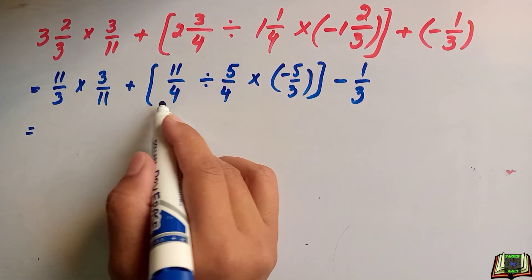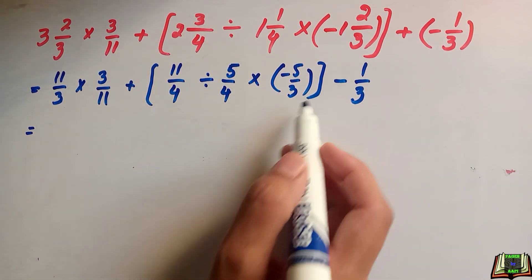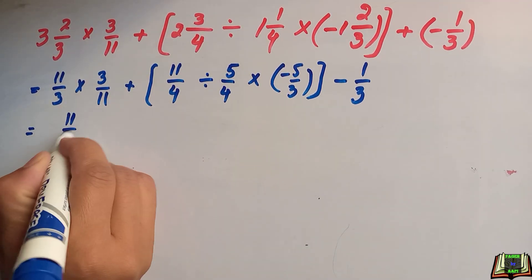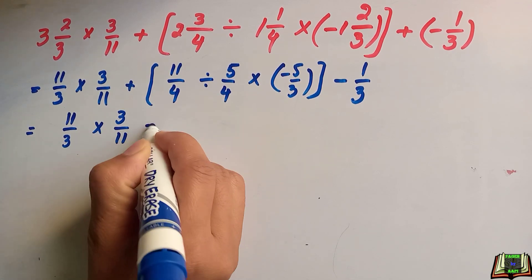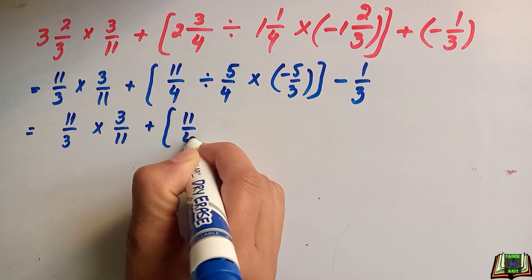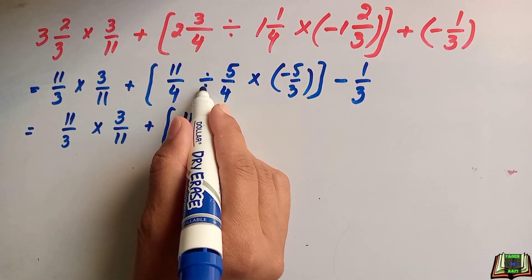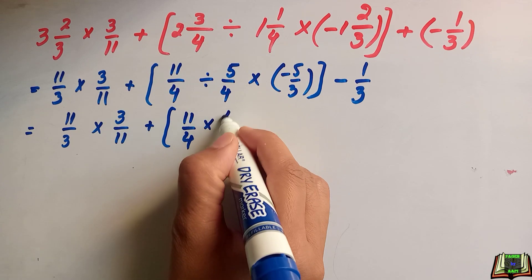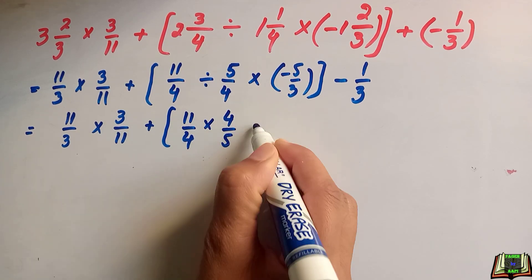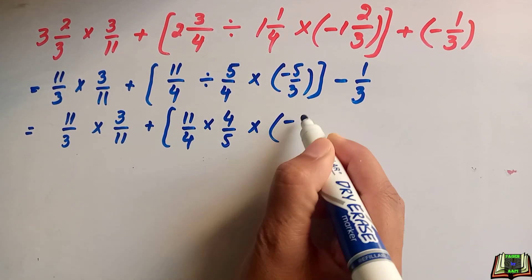Square bracket: 11 over 3 multiply by 3 over 11 as it is, plus 11 over 4. When we change division into multiplication, this next fraction will change into its reciprocal: 4 over 5, minus 5 over 3 [bracket close, square bracket close] minus 1 over 3.